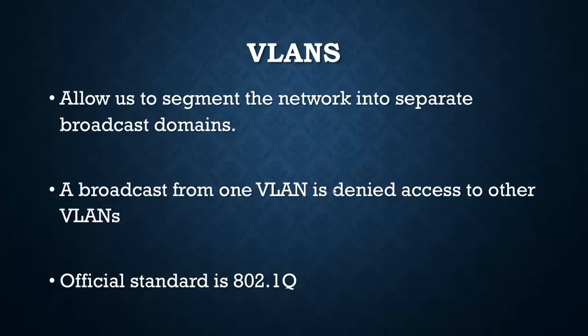In order to break up broadcasts on a switch, they invented VLANs. VLANs allow us to segment the network into separate broadcast domains. So if you've got a 24-port switch, you can put 12 ports in VLAN 1 and 12 ports in VLAN 2, and a broadcast in VLAN 1 would only go out to ports 1 through 12, and the other ports would be unaffected.